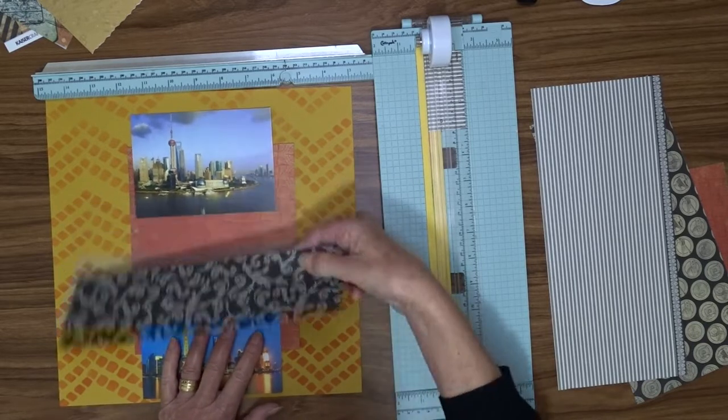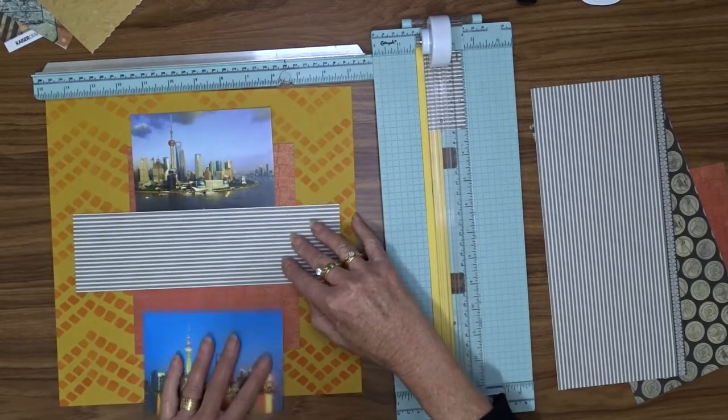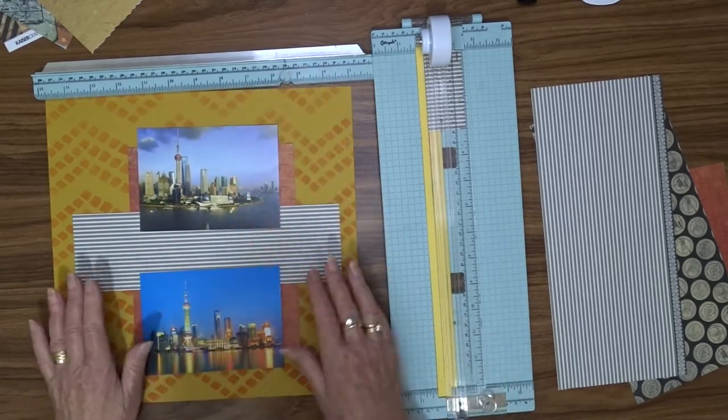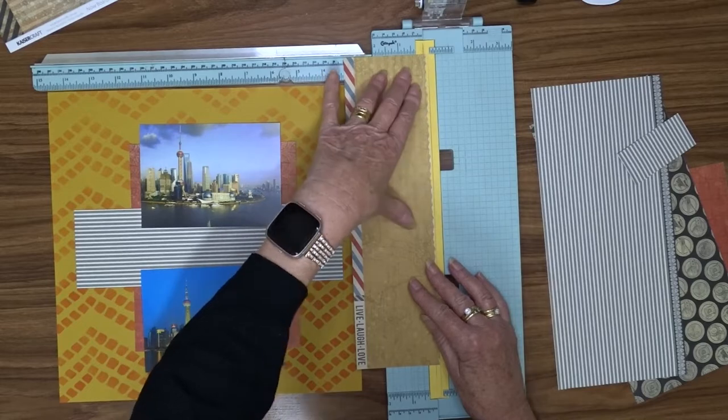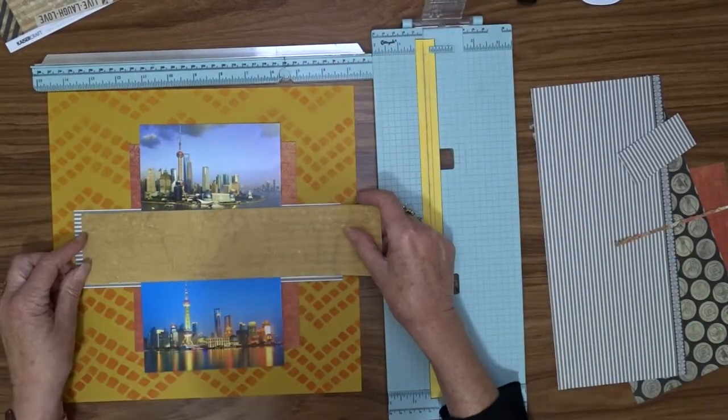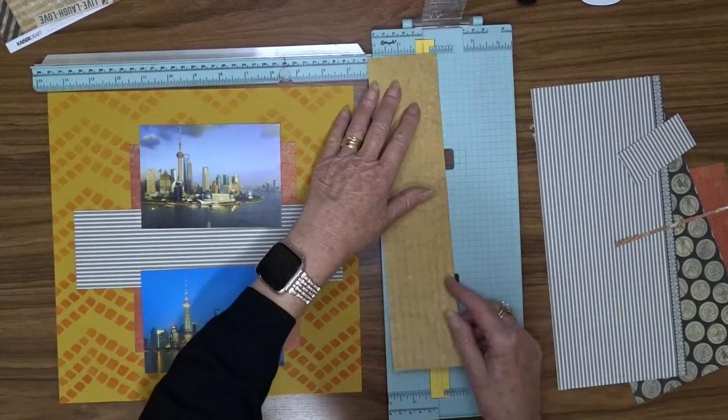Now I'm going to choose a yellow paper to go on top of that, and I'm going to use the Kaiser Craft Now Boarding—the paper is called Boarding Path. I'm going to trim that down so it's two and a quarter inches by nine and a half inches.